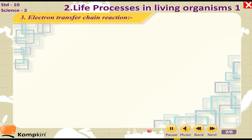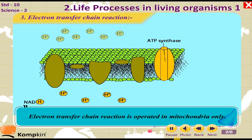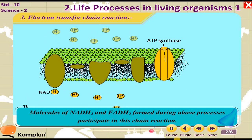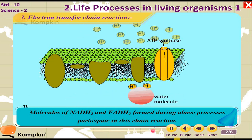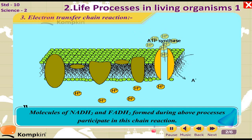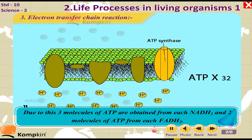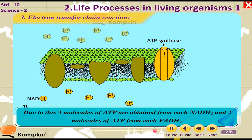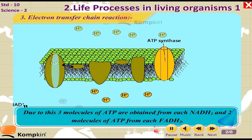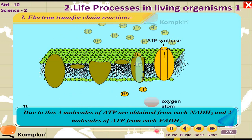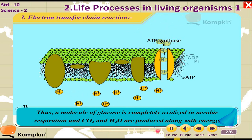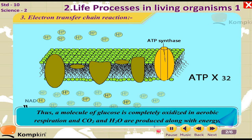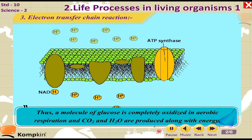The third step is the electron transfer chain reaction, which is operated in the mitochondria. Molecules of NADH₂ and FADH₂ formed during the above processes participate in this chain reaction. As a result, three molecules of ATP are obtained from each NADH₂ and two molecules of ATP from each FADH₂. Thus, a molecule of glucose is completely oxidized in aerobic respiration, producing CO₂ and H₂O along with energy.